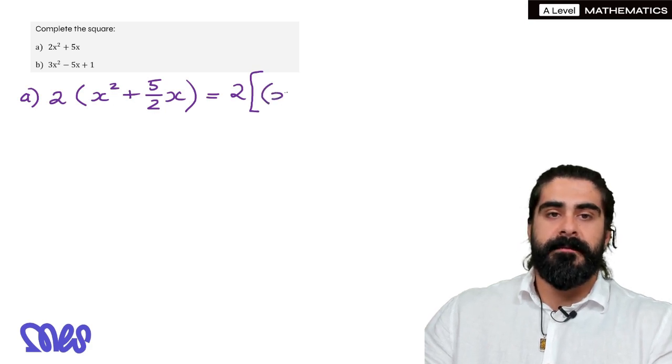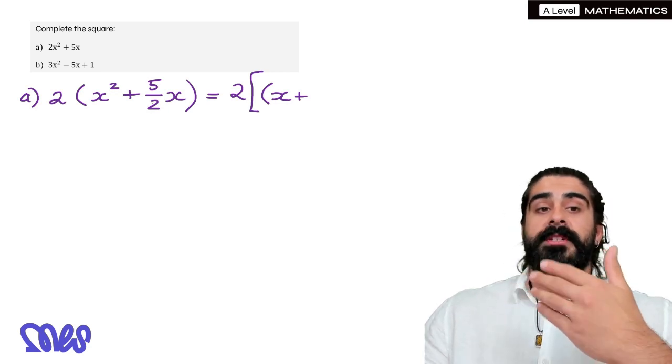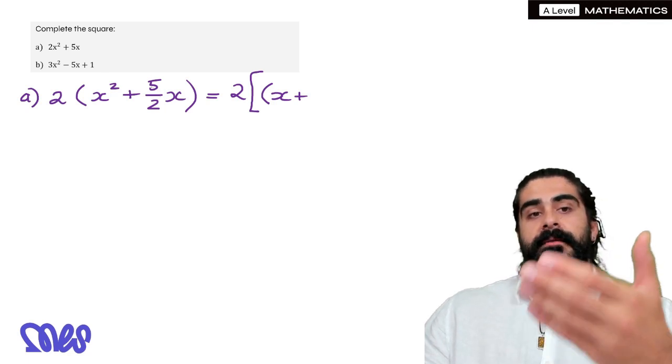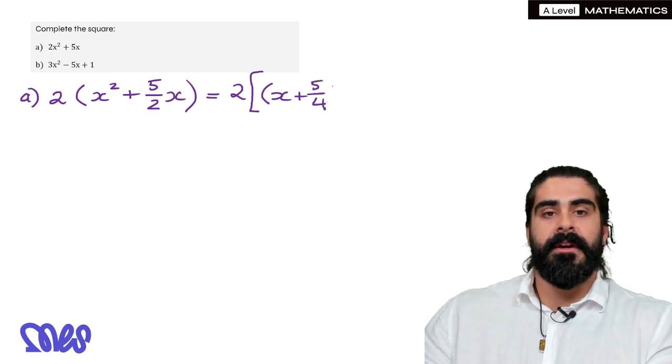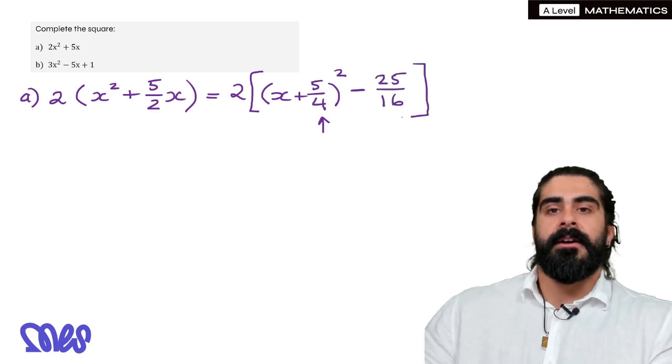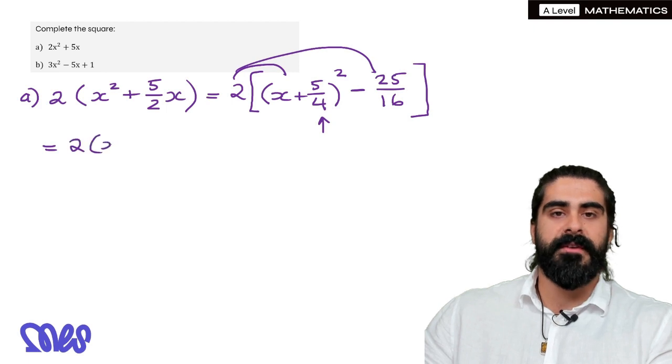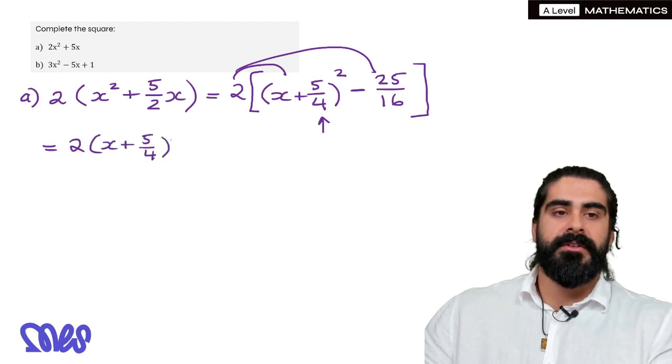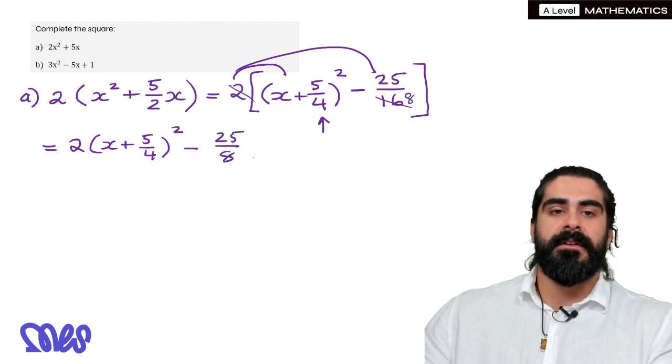So what we do now is we introduce the square bracket and add another bracket, so we're going to have x plus, now we half the middle term. Now think about it like this, if you take a fraction and double it or times it by 2, you double the numerator, if you half the fraction then you double the denominator, so it becomes 5 over 4. Then squared, then we subtract this number squared, so remember when we square a fraction we square the top and we square the bottom. Okay now we just clean it up. So we multiplying the 2, so we're going to have 2 lots of x plus 5 over 4 squared minus, then 2 times 25 over 16, the 16 would cancel the 2 to make 8 on the denominator, so 25 over 8.